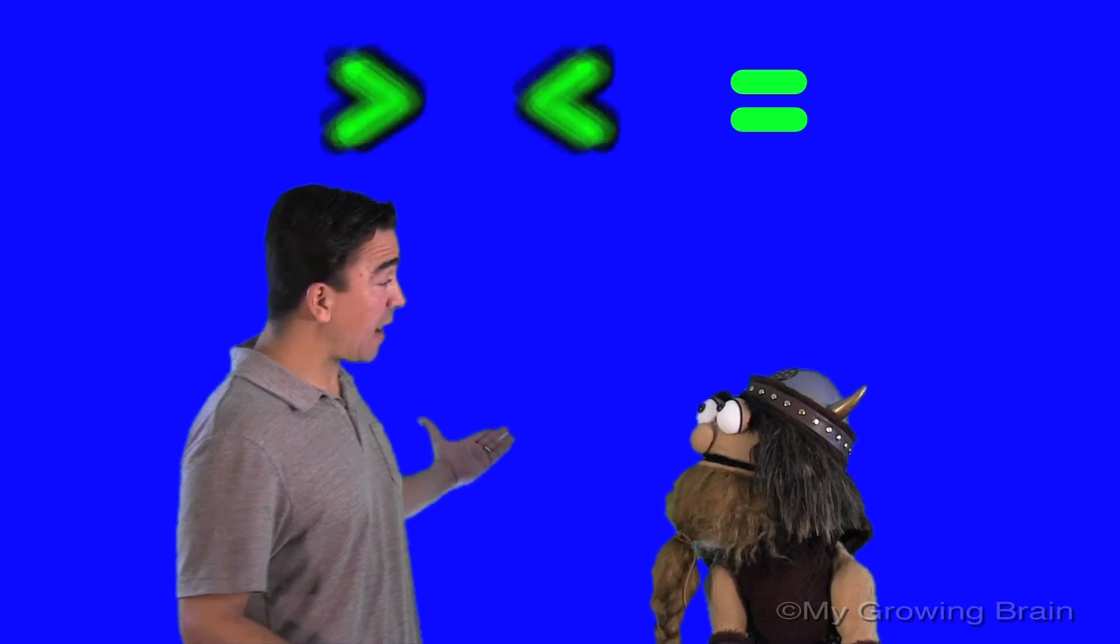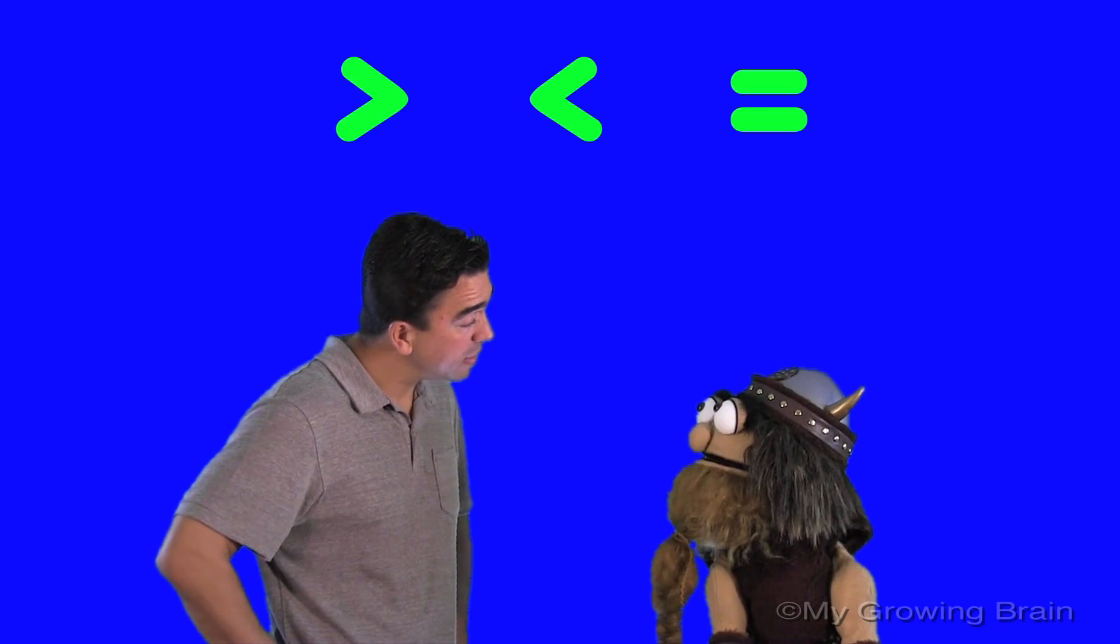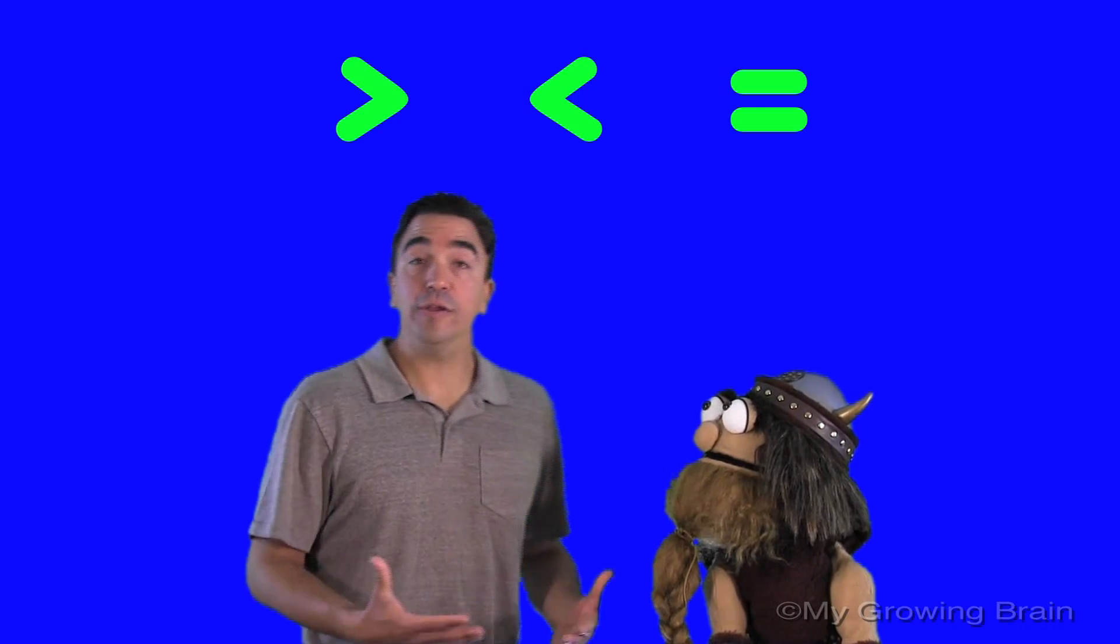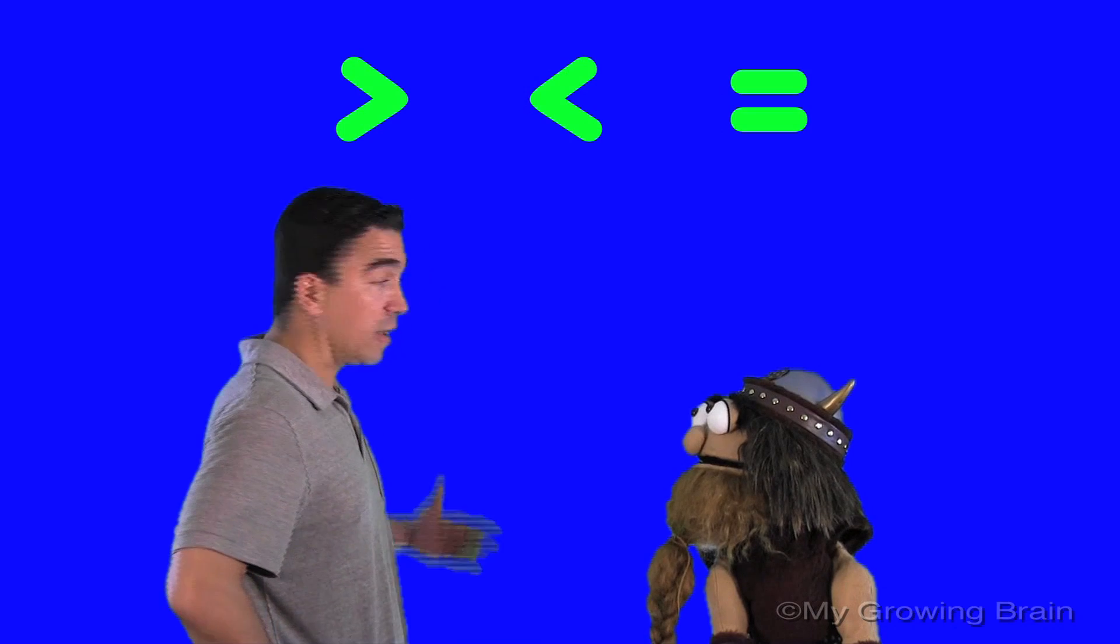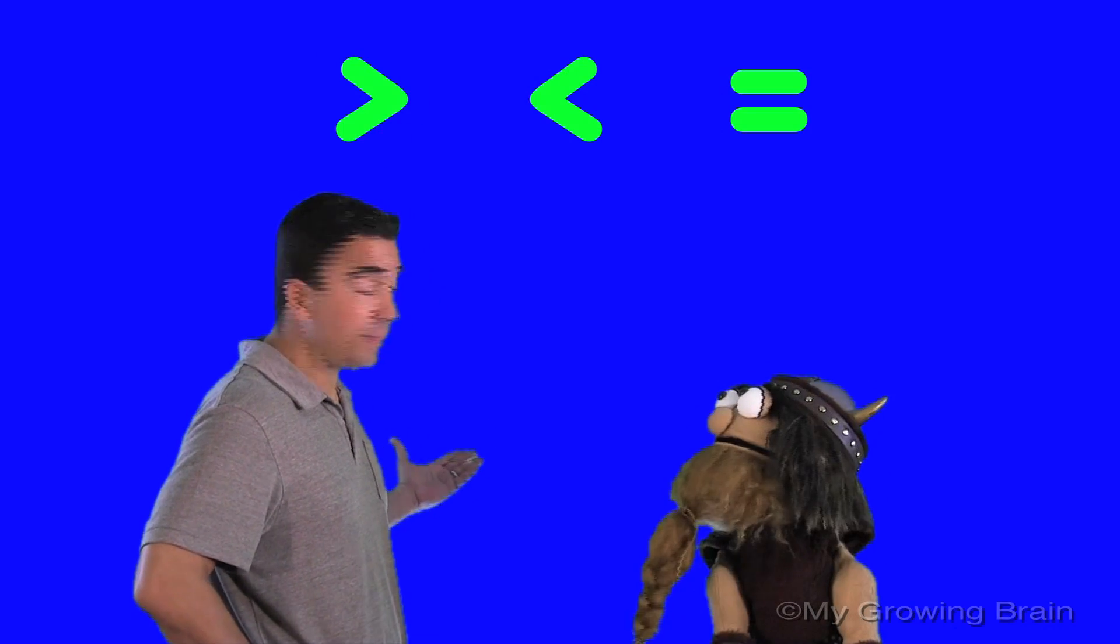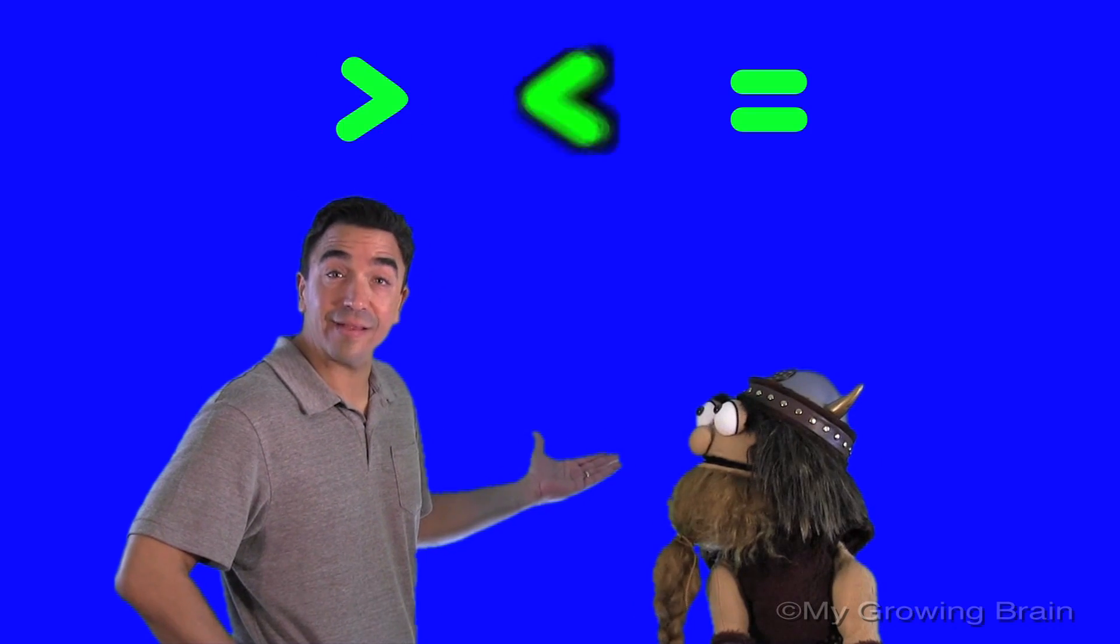Alright, thanks, Coach Mike. Well, do you know what these signs are for? Well, Coach Mike, I've never seen these signs before. Well, these signs are used to compare numbers. This is the greater than symbol. This is the less than symbol.